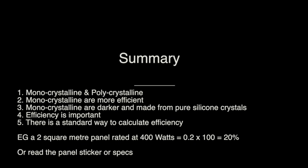Okay, let's have a summary. We've looked at two types of makeup of solar panels, monocrystalline and polycrystalline. Monocrystalline are more efficient. Monocrystalline are also darker and made from pure silicon crystals. Efficiency is important. There is a standard way to calculate efficiency. So you can calculate it or you can read the panel sticker or check the specs for the panel.